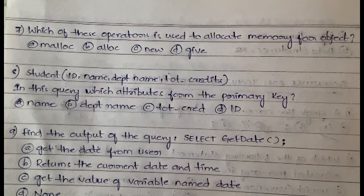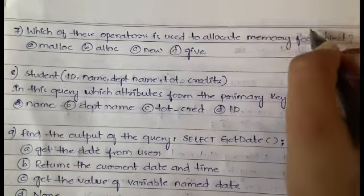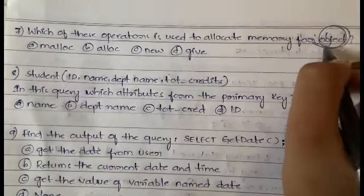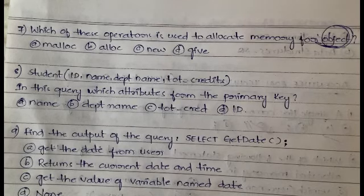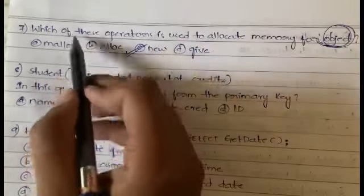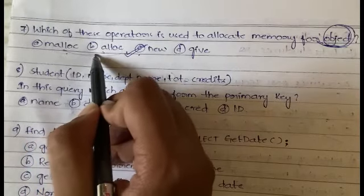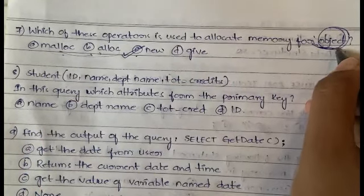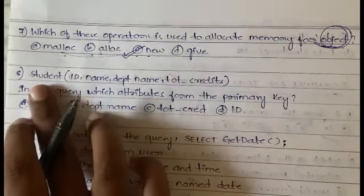Which of these operators is used to allocate memory for an object? You might think malloc and alloc are correct, but you have to notice it says object here. In the case of objects, for example in Java, we use the new keyword to create an object. Malloc and alloc are used for dynamic memory allocation, but for objects we use the new keyword.